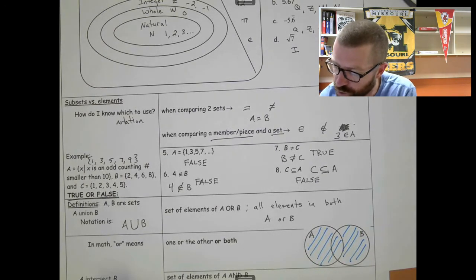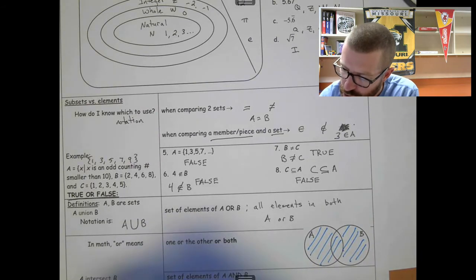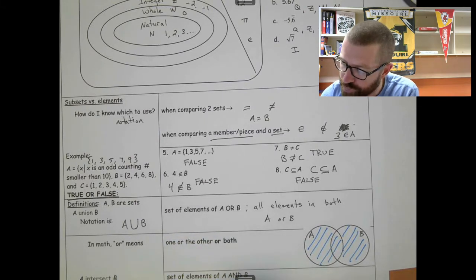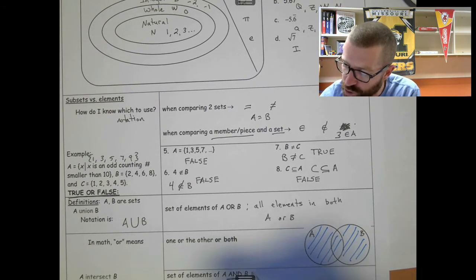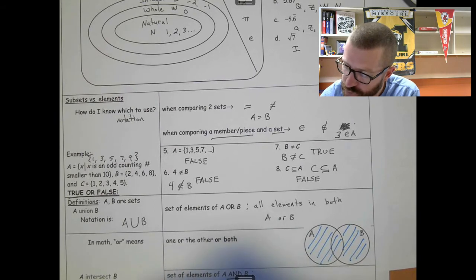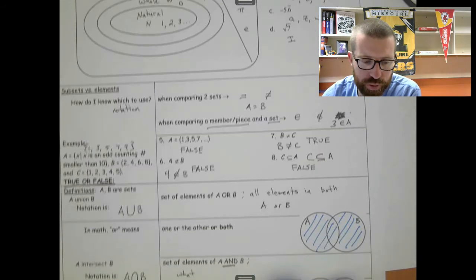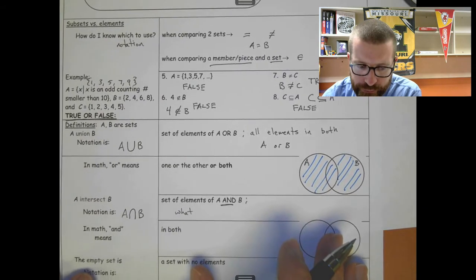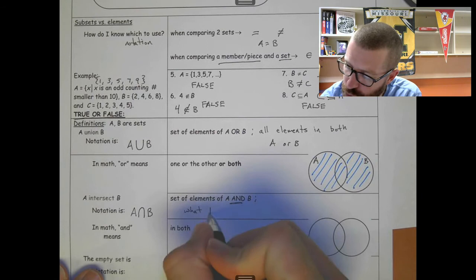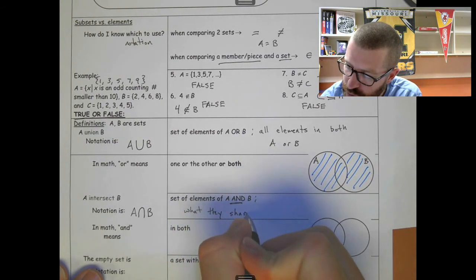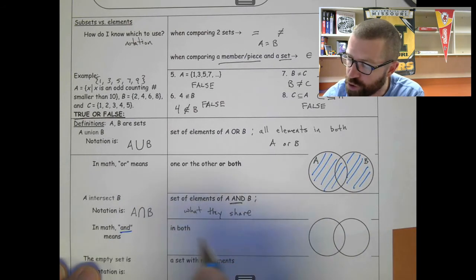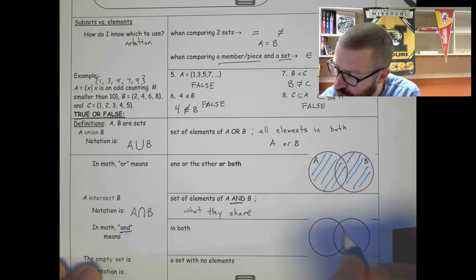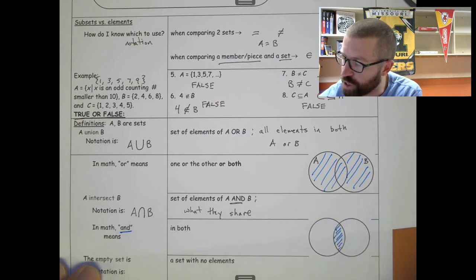The intersection. So an intersection, A intersect B, we write as A with that upside down union. It's a cap, B. And it's the set of elements of A and B. So it's what they have in common. We'll say what they share. We have this word, and, that we use, or it's in both. And if this were the diagram, then it would be shaded in the middle.